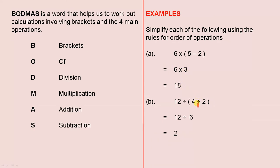For the next one, exactly the same thing. That section there, where the 4 and the 2 are in brackets, we have to do that first. So 4 + 2 gives us 6. 12 ÷ 6 gives us 2.